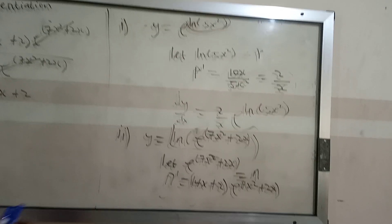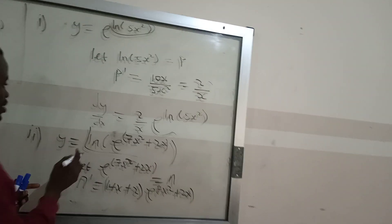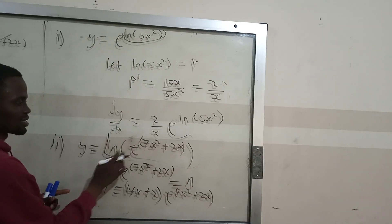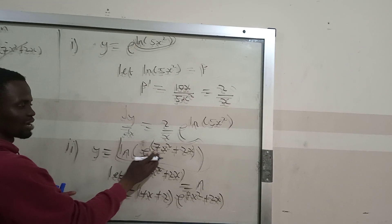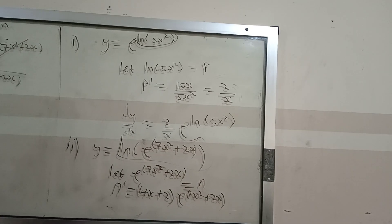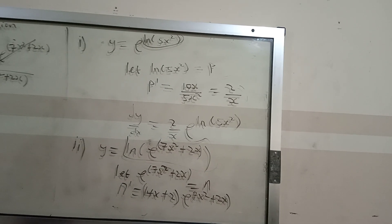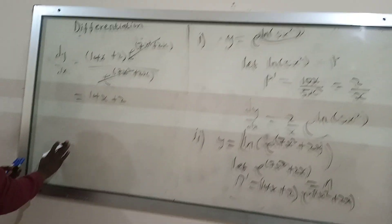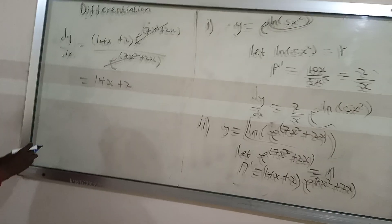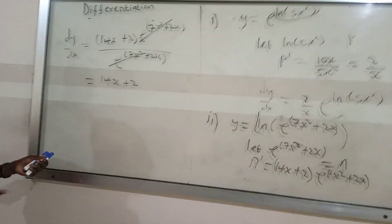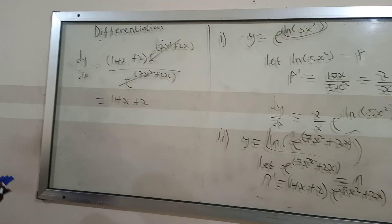In fact, before you start, the ln and e cancel each other out and you get 7x² + 2x directly. Then differentiate that to get 14x + 2 straight away. So that's the answer. Thank you very much.